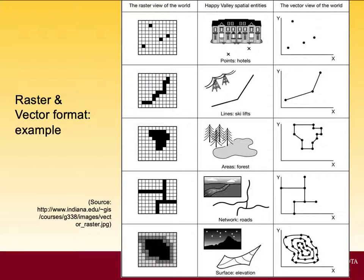Here are more examples of raster versus vector format elements. The middle column shows real-world objects, the left column shows the raster view, and the right column shows the vector view. The most interesting row is the contour maps example, which connects to the questions from lab 4 on soil sampling designs — the first map was in vector format and the second in raster format.